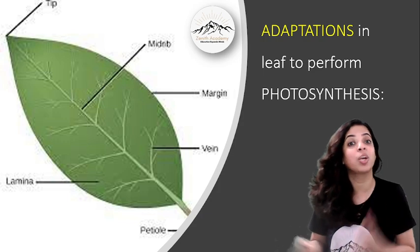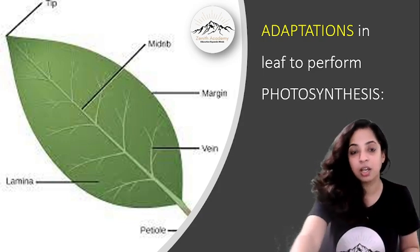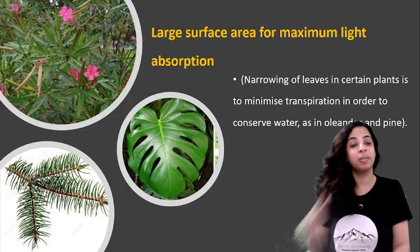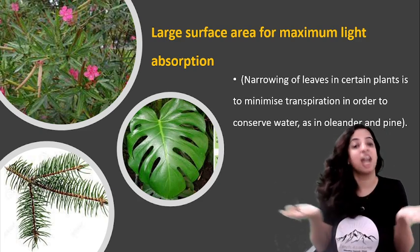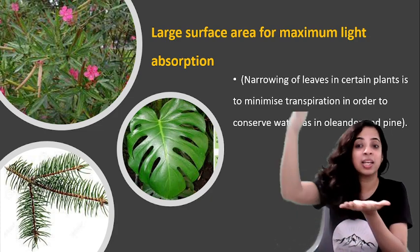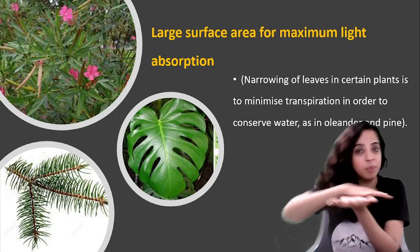The first adaptation is large surface area of the leaf. So if the leaf has a large surface area, there can be maximum light absorption because of large surface area.